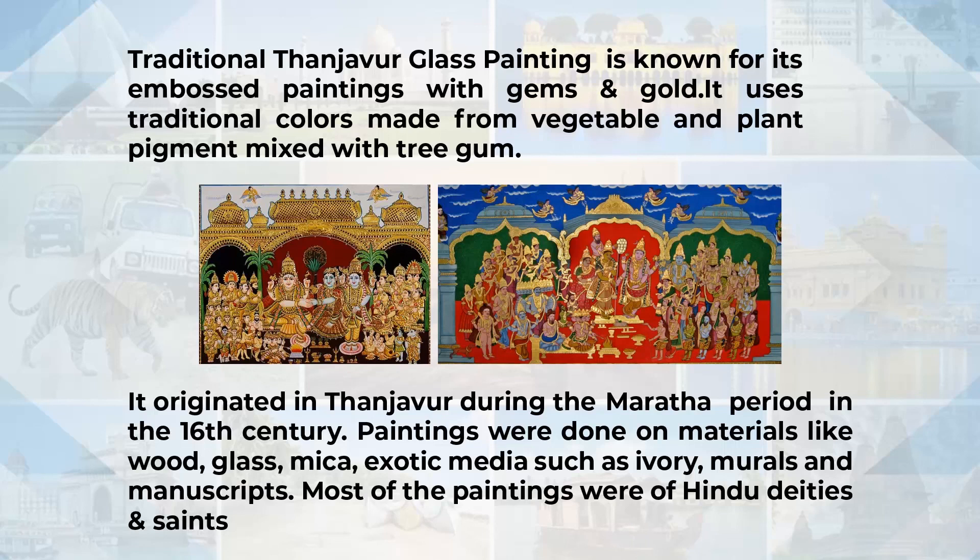This art originated in Tanjavur during the Maratha period in the 18th century. Paintings were done on materials like wood, glass, mica, and exotic media such as ivory; murals and manuscripts were also used. Most of the paintings were of Hindu deities and saints.